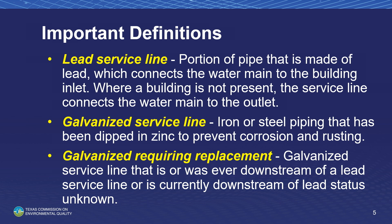A galvanized service line means iron or steel piping that has been dipped in zinc to prevent corrosion and rusting. Galvanized requiring replacement, or GRR, is a new term in the LCRR, and it means a galvanized service line that is or ever was at any time downstream of a lead service line, or is currently downstream of an unknown service line. For community systems, a GRR service line would be demonstrated with a private-side galvanized service line and a public-side service line of lead or unknown status.